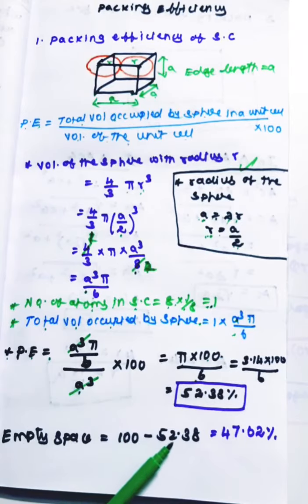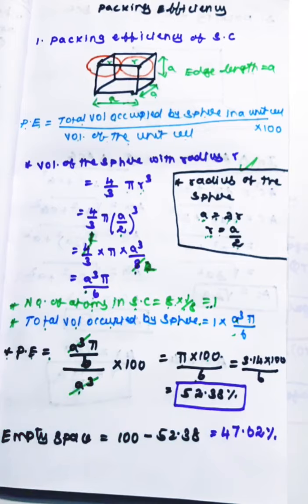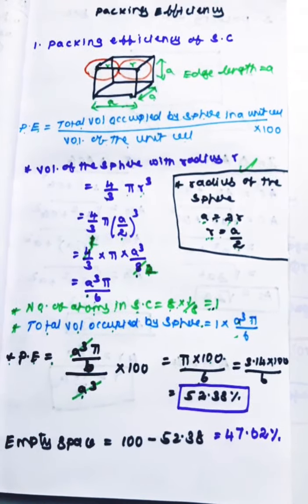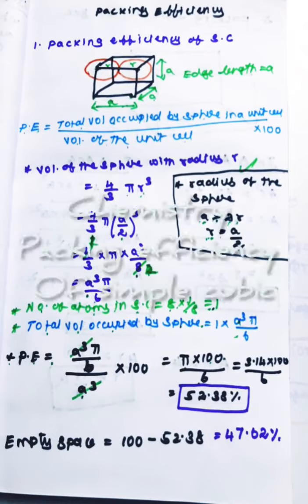100 minus 52.38 gives 47.62% empty space in the simple cubic. It is a very important topic.